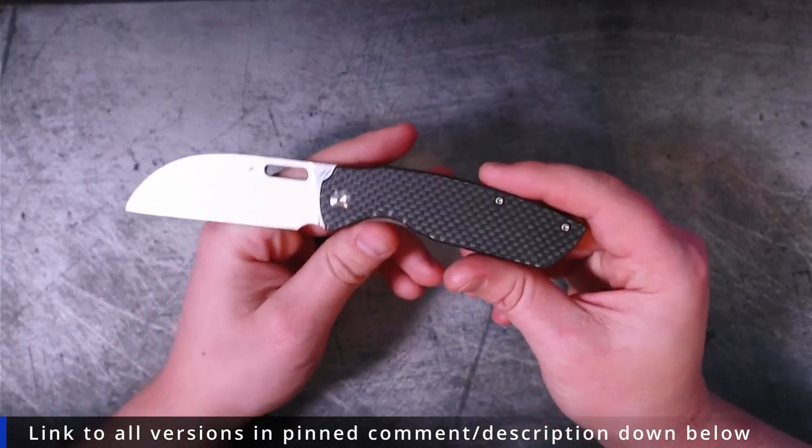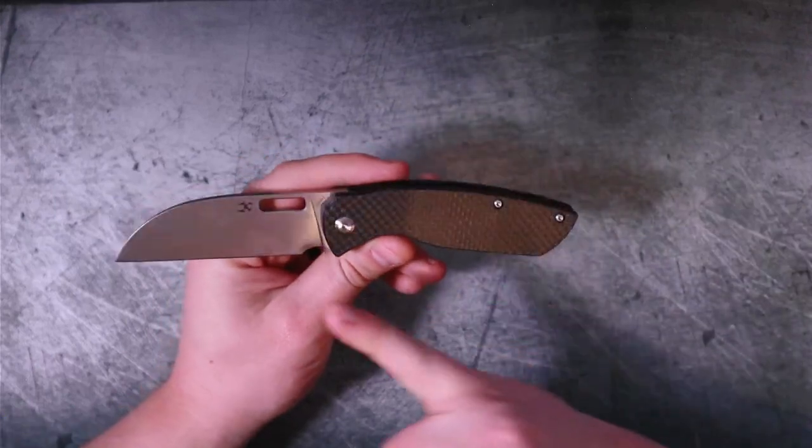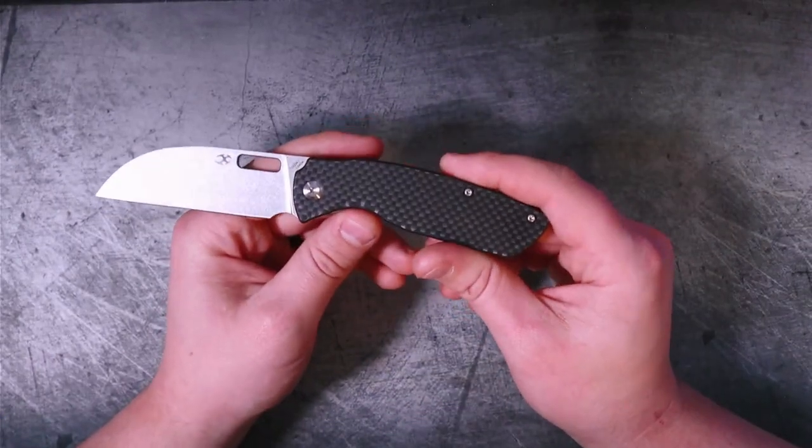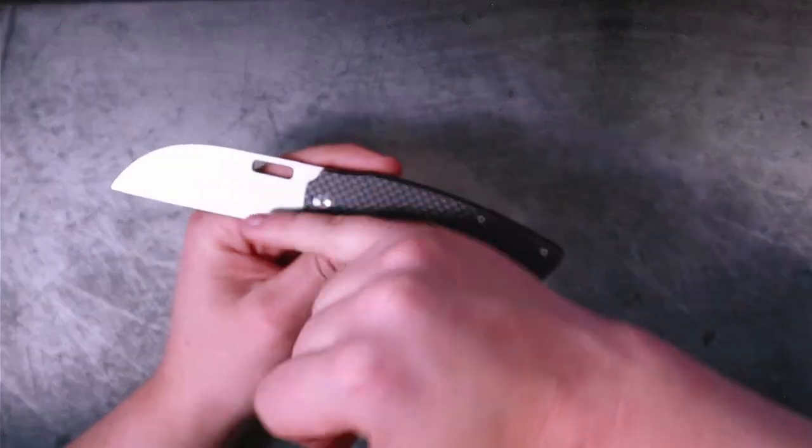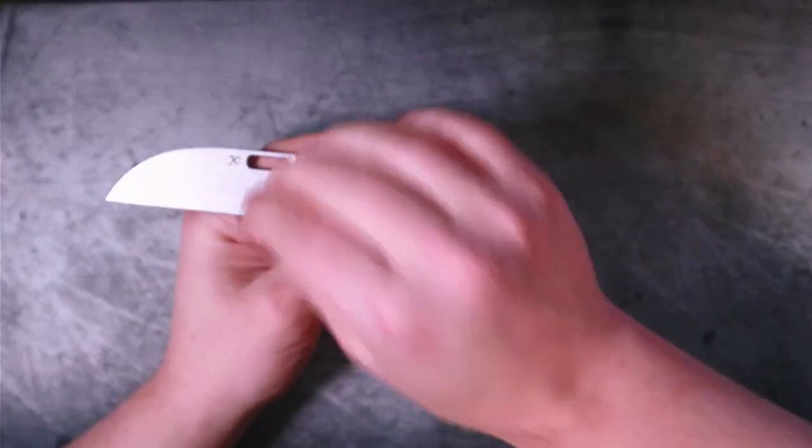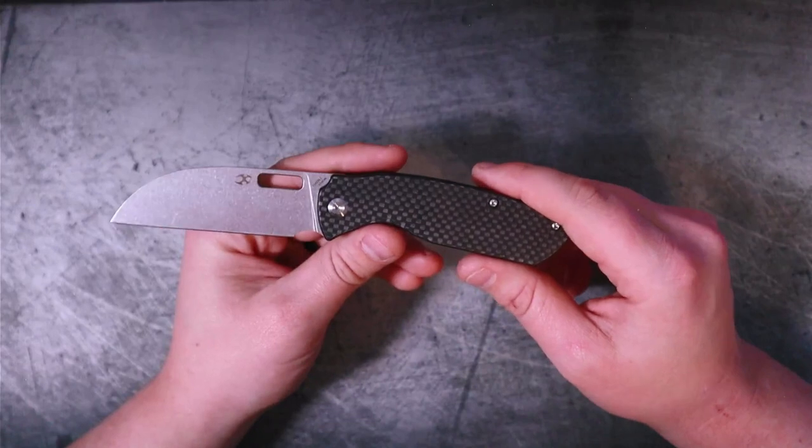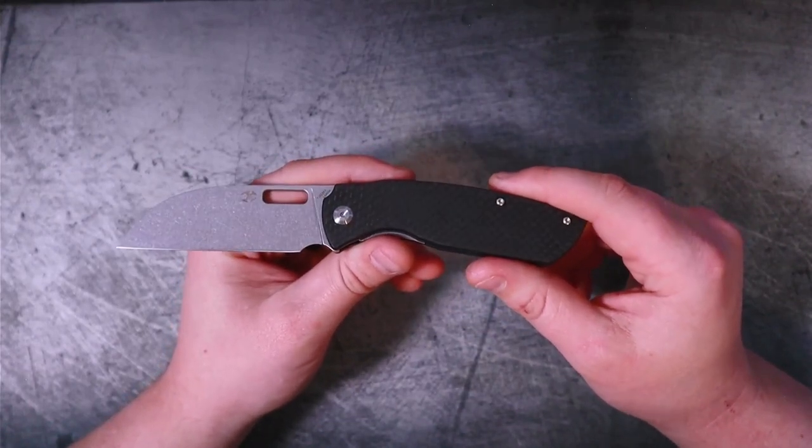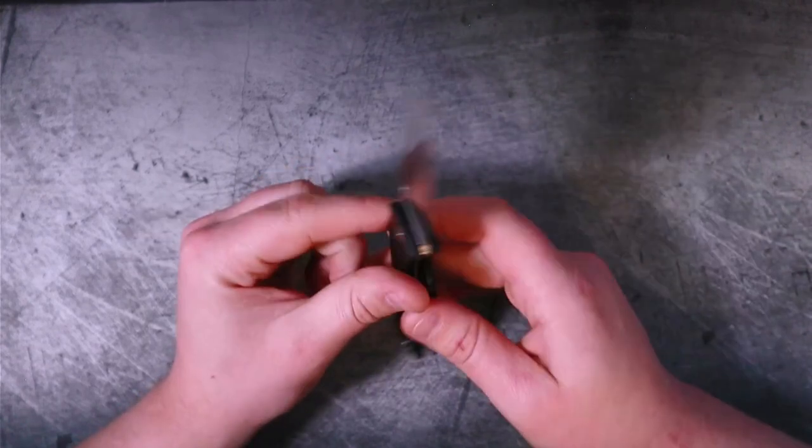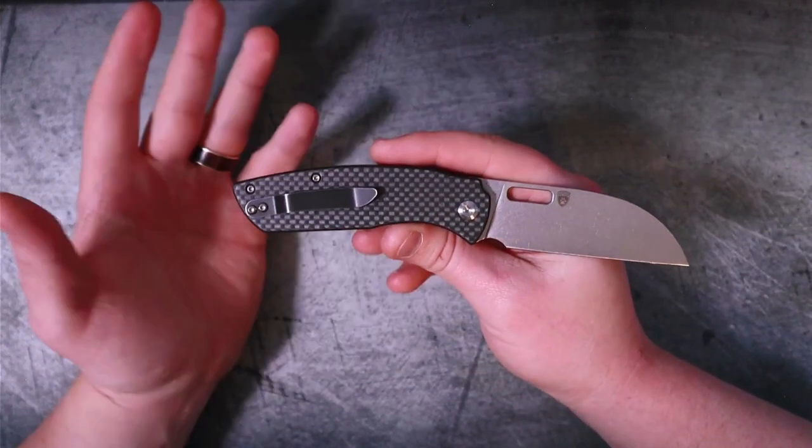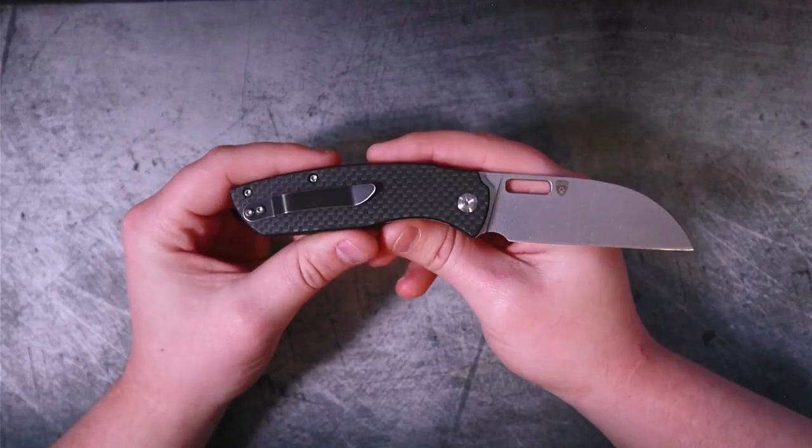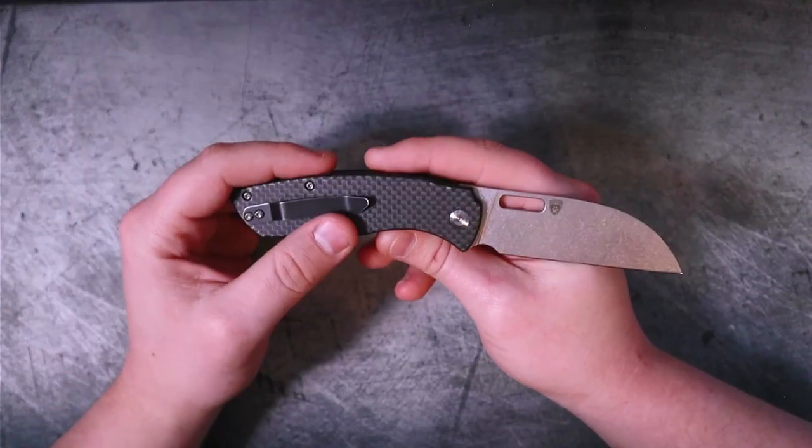If you want to go super bougie, you can get one with the flat thumb stud—it's not a disc, it just sticks out and it's a single-sided thumb stud—and you can get it with damascus. These go all the way up to almost $300. Honestly, I think that this less expensive version might actually be the one that I would prefer.